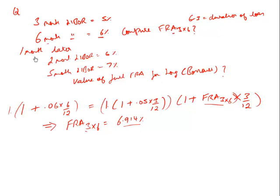However, one month has now passed. The FRA expires 3 months later, and we will compare the actual rate with 6.914% to compute the payoff. But interest rates have fluctuated over that one month — can they fluctuate? Yes. Now the 2-month LIBOR is 6% and the 5-month LIBOR is 7%, and we are asked for the current value of this FRA.